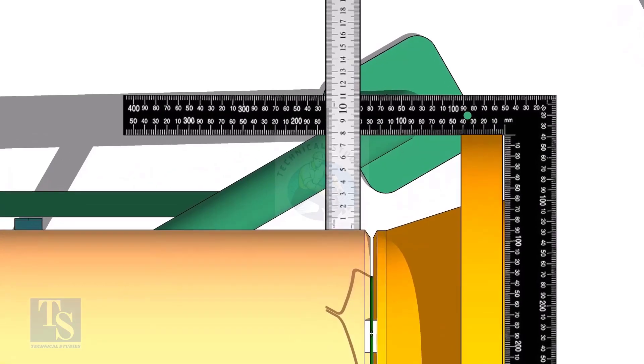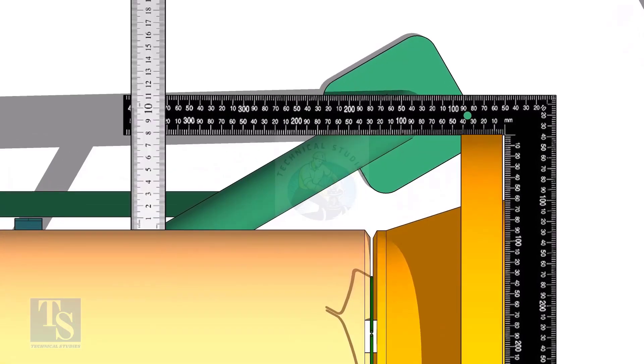Hold a right angle horizontally and maintain the squareness. Tack weld at both sides of the joint.